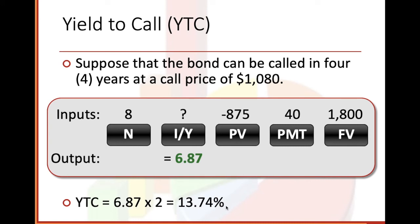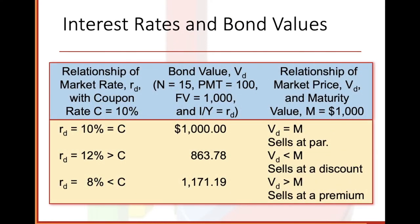Interest rates and bond values. Relationship of market rate R_D with coupon rate C = 10%: when R_D = 10% equals C, the bond sells at par. When R_D = 12% greater than C, the bond value with N = 15, payments of $100, future value $1,000 is $863.78 — a discount. When R_D = 8% less than C, the bond value is $1,171.19 — a premium.